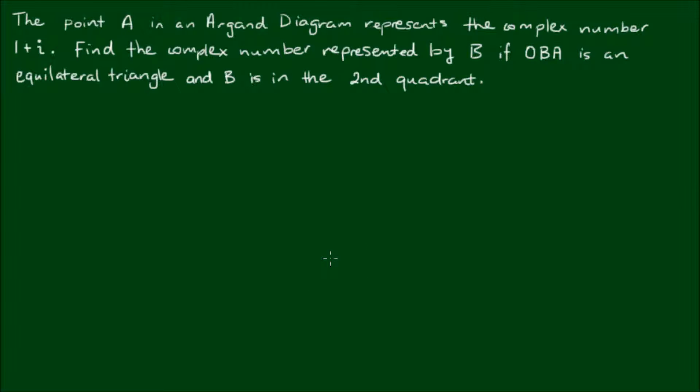To make sense of what this is saying, let's draw a diagram. We are given that A, which equals 1 plus i, obviously has the coordinates of 1, 1. So 1 on the real axis and then 1 on the imaginary axis.